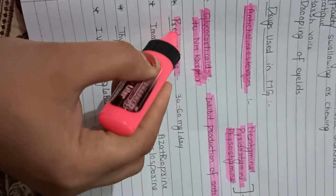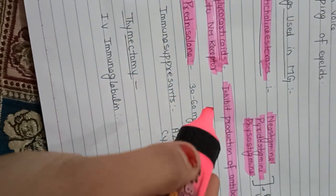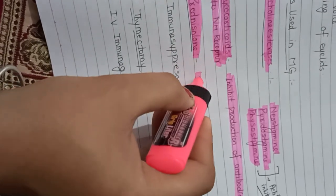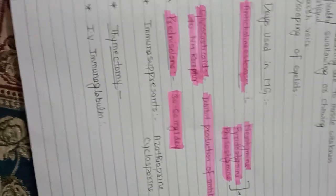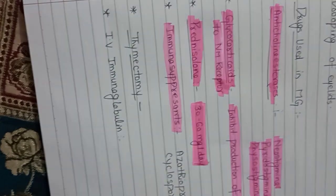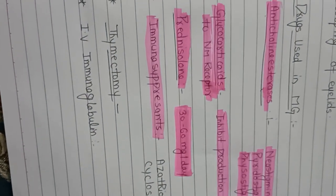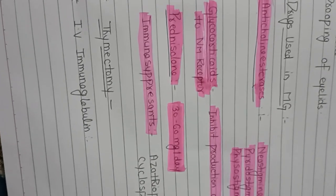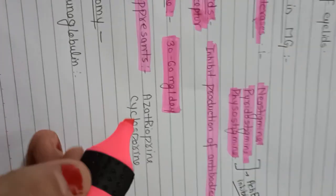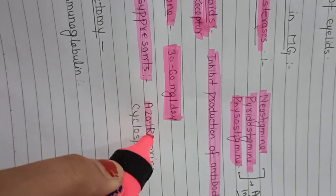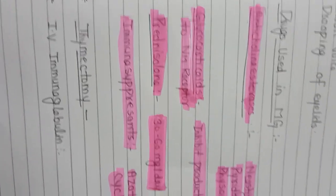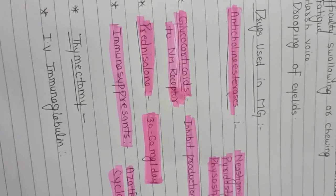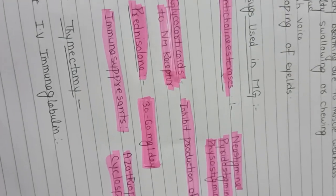The third choice is prednisolone, which works similarly. Immunosuppressants are also used: the first is azathioprine, and the second is cyclosporine. These are two immunosuppressant drugs which can be used in the treatment of myasthenia gravis.